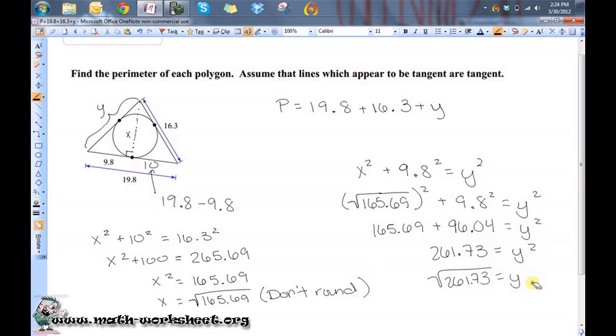Is equal to y. So, I'm going to leave it as the square root of 261.73, so I will also not have any rounding errors. I'm just going to go ahead and say that the perimeter is equal to 19.8 plus 16.3 plus the square root of 261.73.